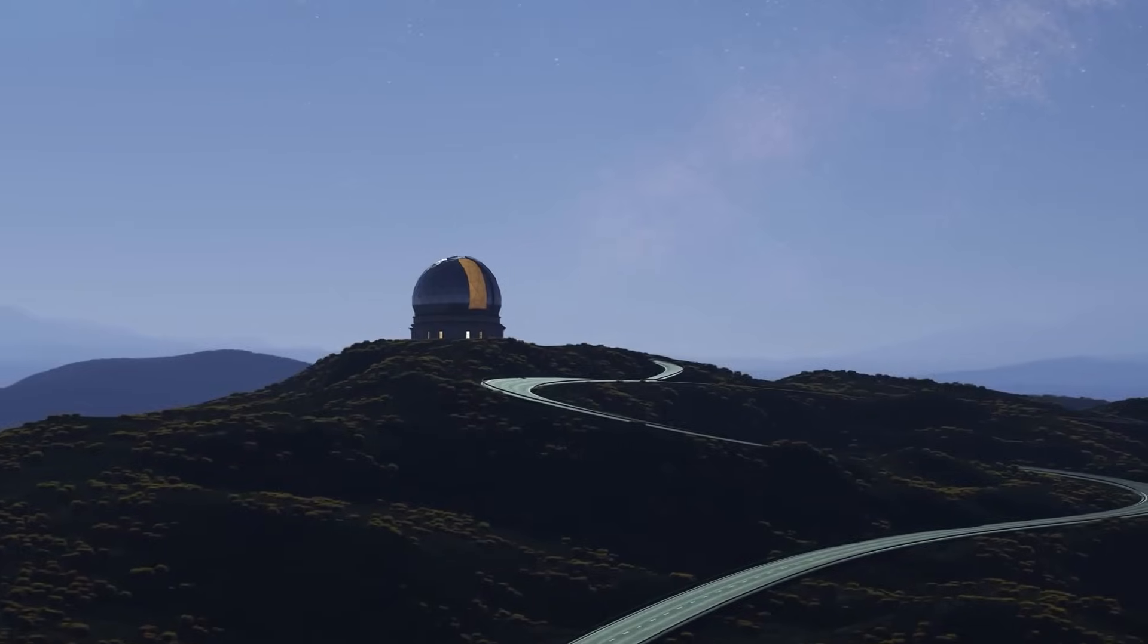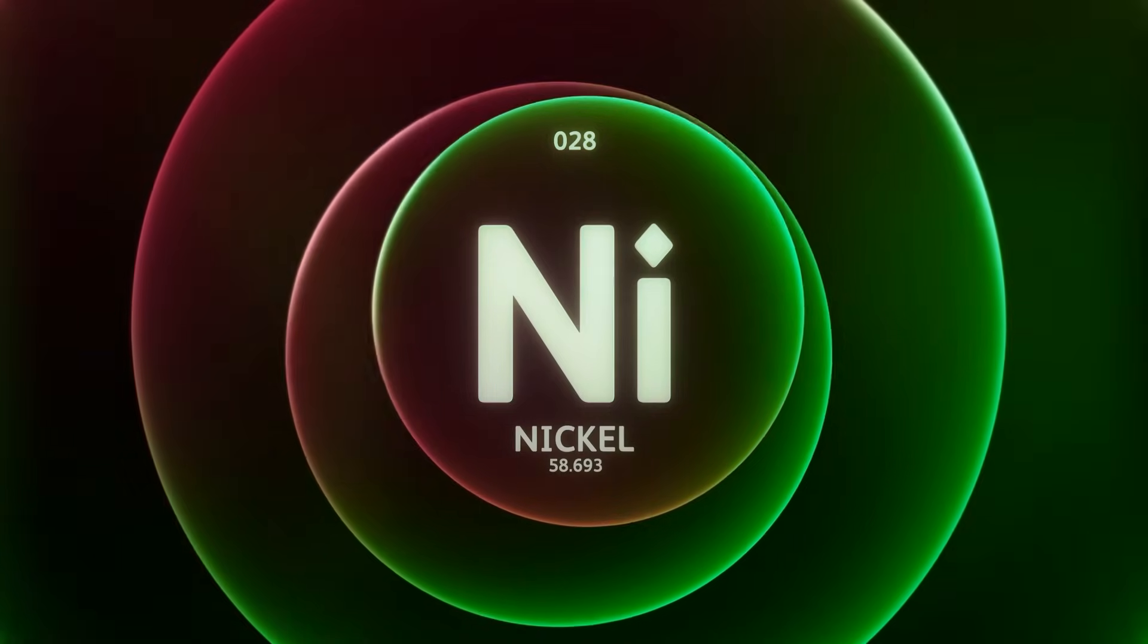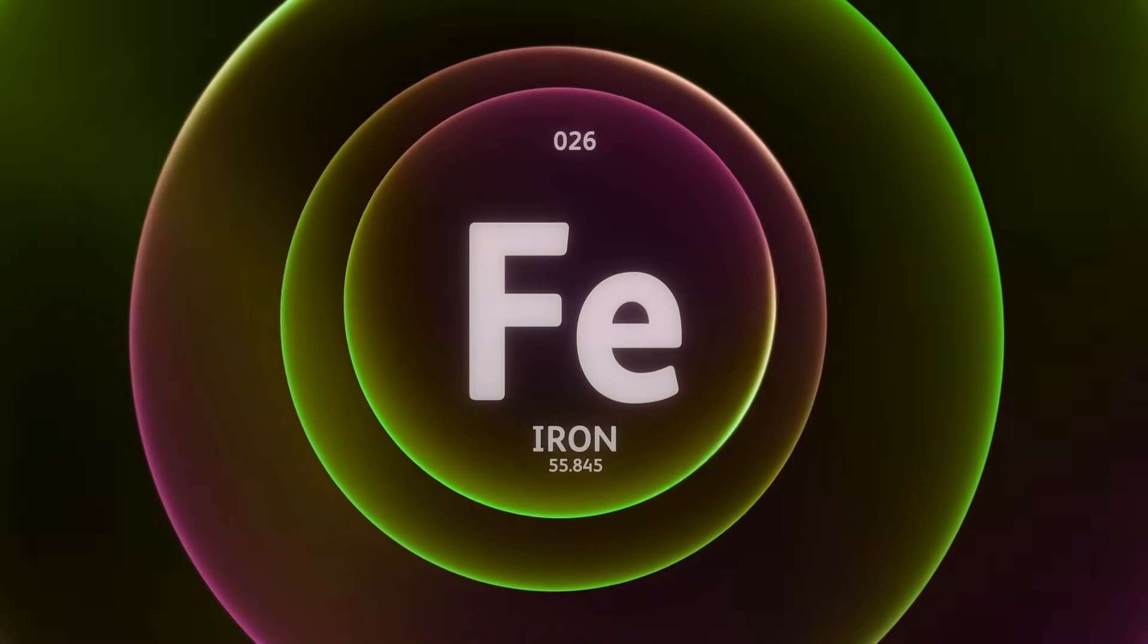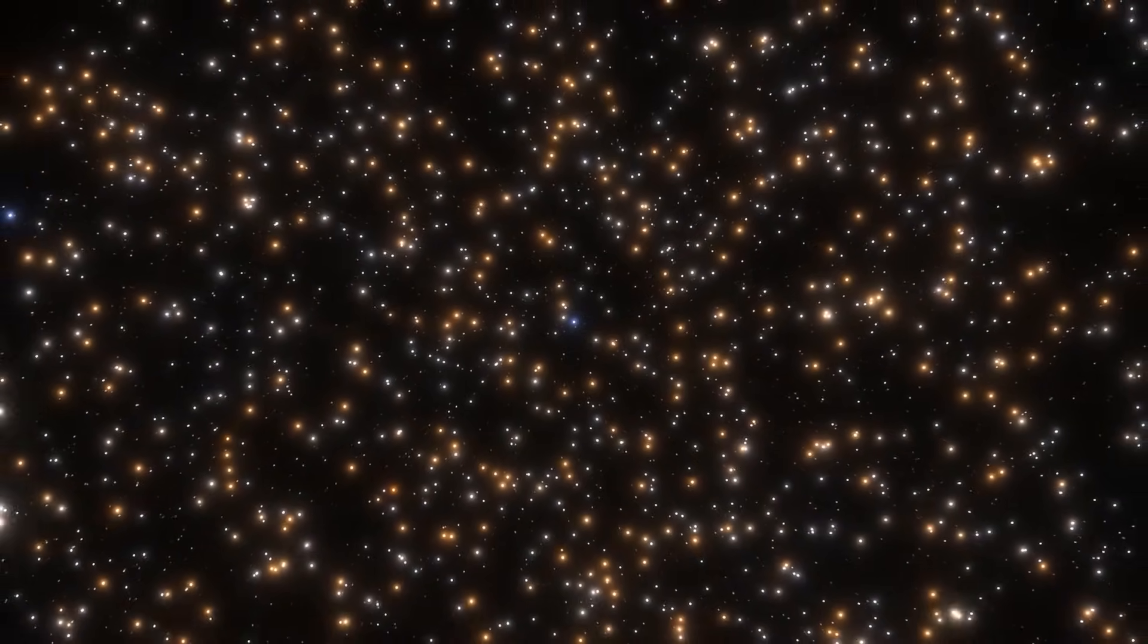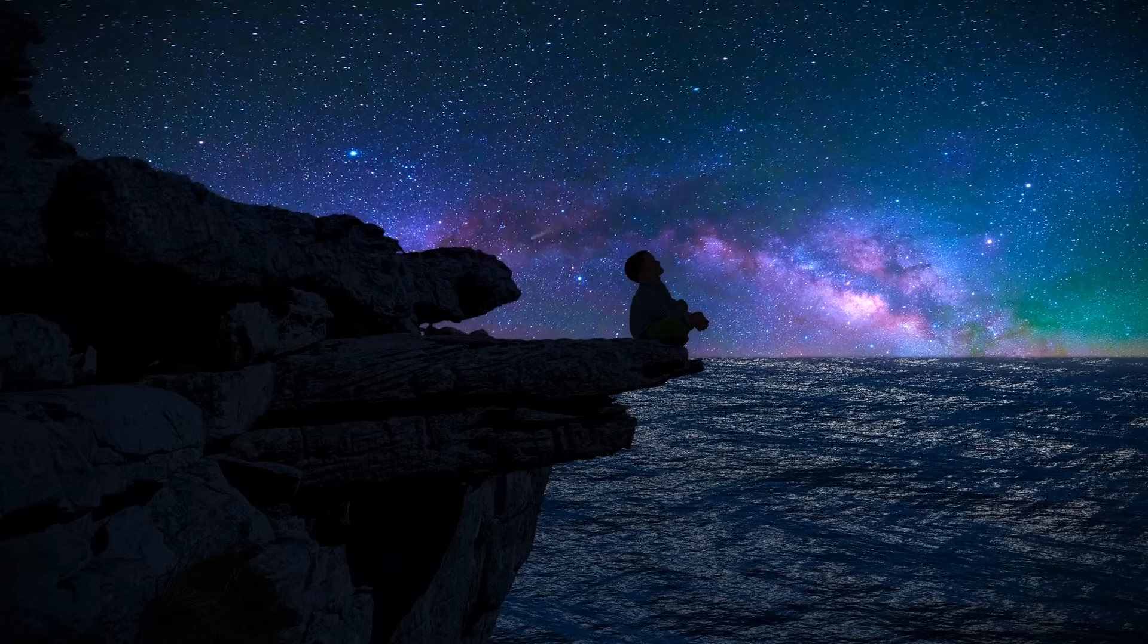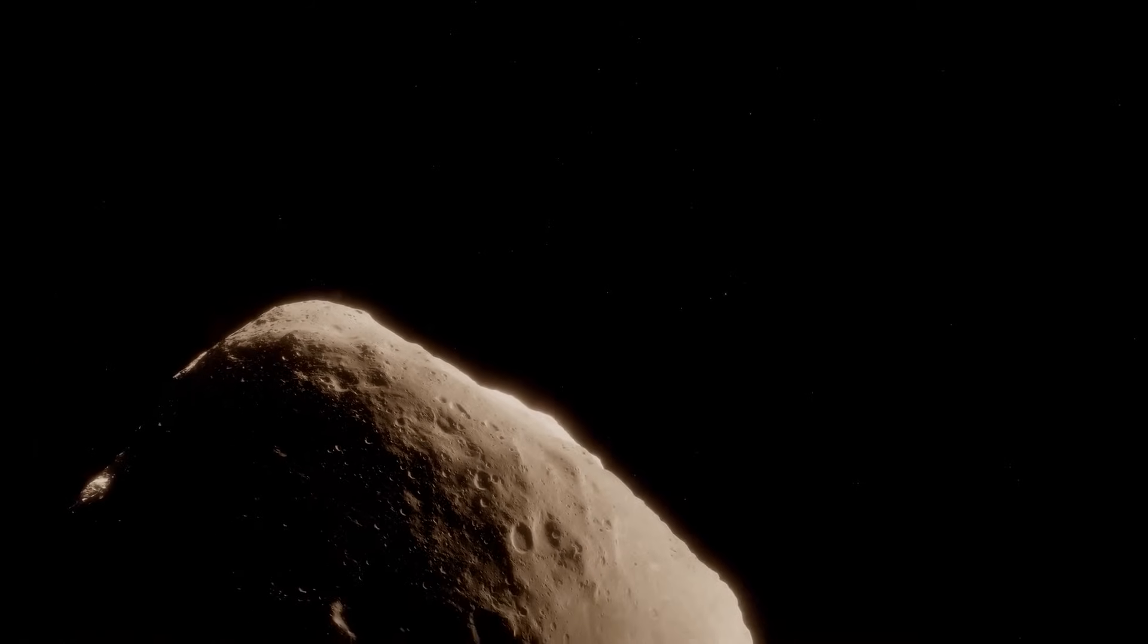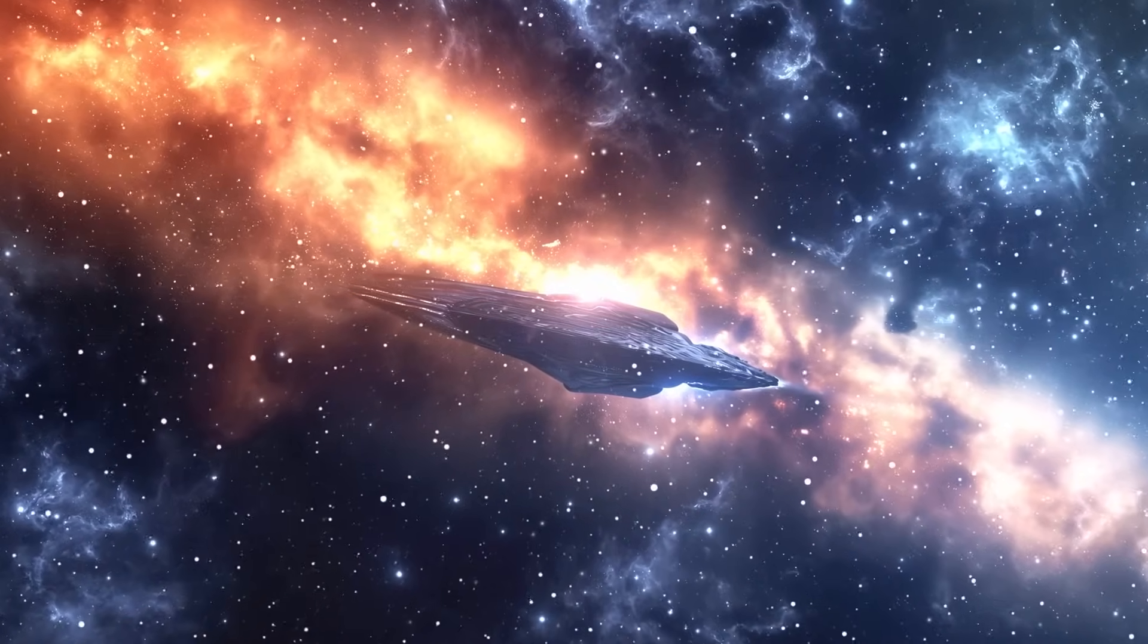Added to this was a discovery made by the Very Large Telescope in Chile. 3i Atlas' gas spectra revealed large amounts of nickel, but no iron. Normally, these two elements occur together, as they are always formed simultaneously in stars and supernovae. So why does nickel appear in isolation here? Some researchers suggest this is an indication of an exotic environment of origin. Others speculate about processes that we do not yet understand, and still others even express the suspicion that the interstellar 3i Atlas comet could actually be a perfectly camouflaged space probe.